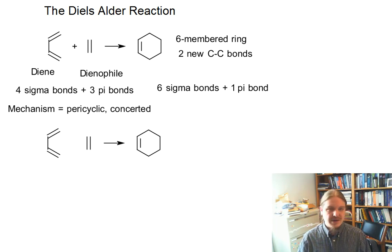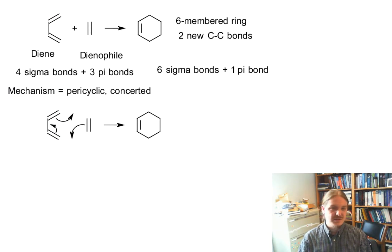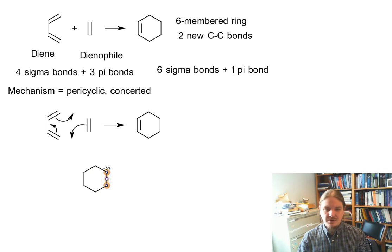Most chemists will draw this mechanism as I am about to. I want to give you a sense of what is going on. We are drawing arrows representing the rearranging of the pi bonds to form the sigma bonds. What we're actually doing is trying to set up what our transition state's going to look like. Here's my transition state.